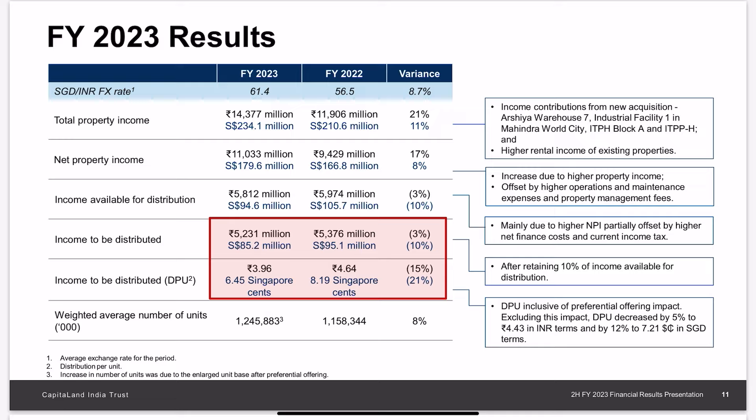This resulted in a decrease in distributable income of 10 percent and DPU of a huge 22 percent. The DPU drop was also amplified due to share dilution from a preferential offering. This is the issue with REITs — if growth in income is slower than the increase in finance costs or share dilutions, the dividend will definitely be lower. Always account for conservative estimations for drops in DPU when deciding what dividend yield you would like to buy in at.